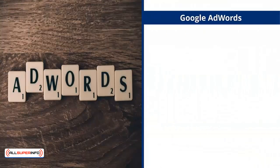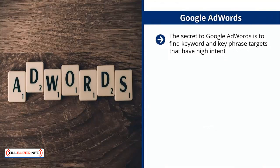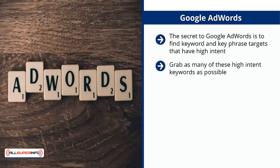Google AdWords: the secret to Google AdWords is to find keyword and keyphrase targets that have high intent. In other words, just by reading these keywords you can tell that the people typing them into Google really want to buy. Grab as many of these high-intent keywords as possible and drive them all to your landing page. Make sure your AdWords and Analytics accounts are linked — this should be enough to help you track which keywords produce the most clicks to your landing page. After this point, you're going to run conversion tests.